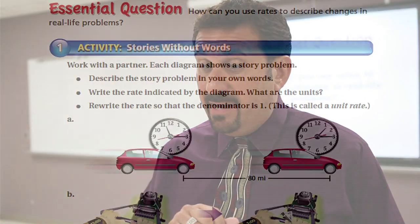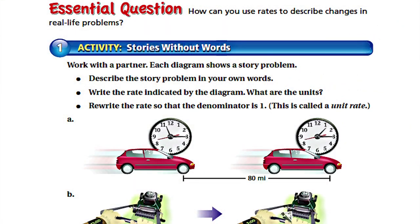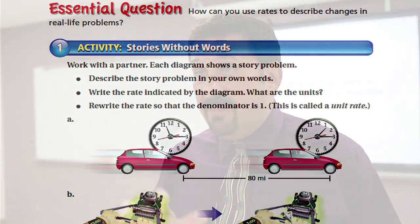A rate is a ratio that compares two quantities. So here's the job: you guys are going to work together and you're going to write a story problem about part A on page 196 in your book. Take a look at part A and we're going to write a story problem that has to do with that particular object. I'll give you some time to go ahead and work with that.